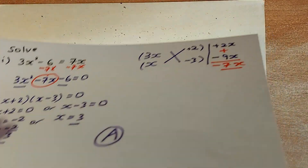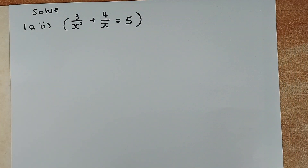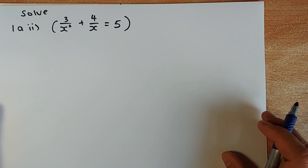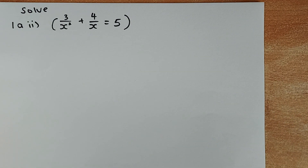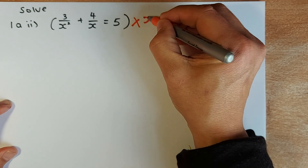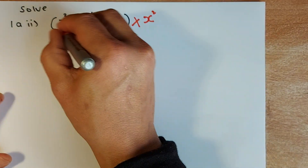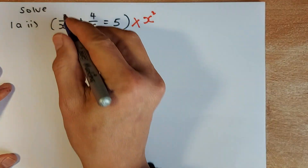Another question on algebra. The next question is to solve that equation. What I would do is very simple: I'm going to multiply the whole equation by x squared, because when I do that I'll get rid of all the fractions. x squared divided by x squared is going to be 1.